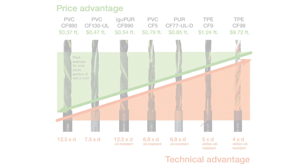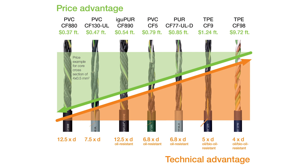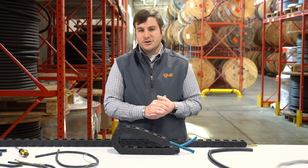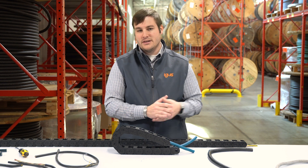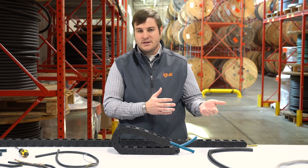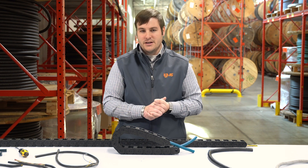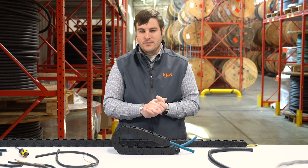IGUS addresses these issues in several different ways. For the jacket cracking and swelling aspect, we essentially have seven different jacket materials that we offer, from a cost-effective PVC material all the way up to a high mechanical quality TPE. These different jacket materials cover several different things like different temperature ranges based on your application needs, as well as different types of media — oils, chemicals, coolants, and that type of thing.